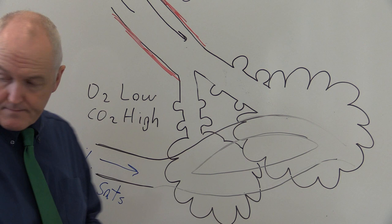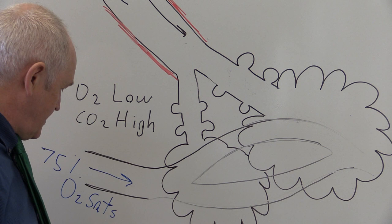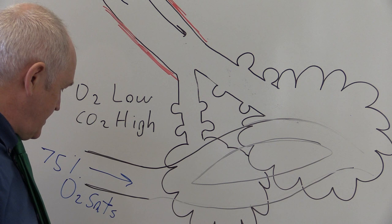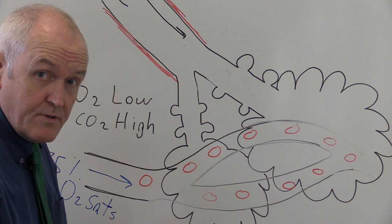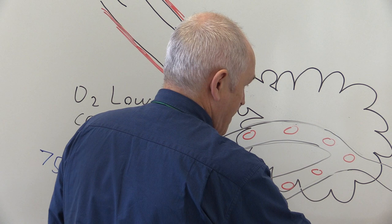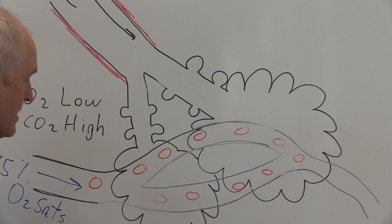The blood from the pulmonary artery will go through these pulmonary capillaries, and there are going to be red blood cells going through these capillaries. Eventually the pulmonary capillaries drain into a pulmonary venule, which joins together with other pulmonary venules, eventually forming branches of the pulmonary vein to take blood back to the left atrium.